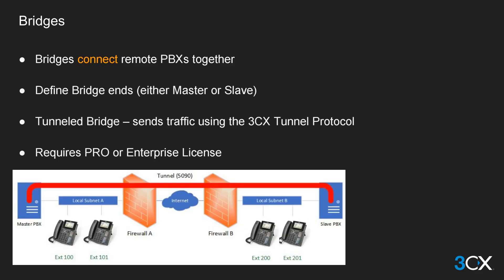Bridges traditionally connect two pieces of land together. In 3CX, a bridge will connect two remote PBXs. A traditional bridge will have its two ends defined as geographical points such as north and south, east and west. A 3CX bridge will have its ends defined as master and slave. A 3CX bridge can also pass traffic between the two PBXs via the tunnel protocol, which is referred to as a tunneled bridge.